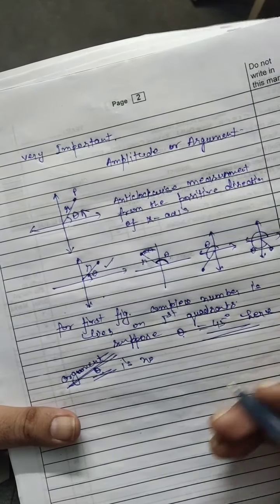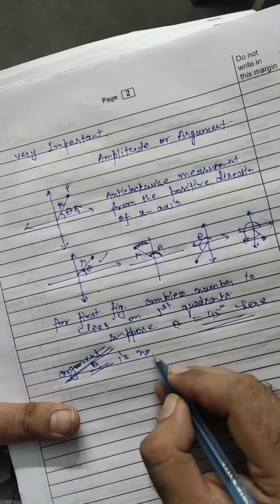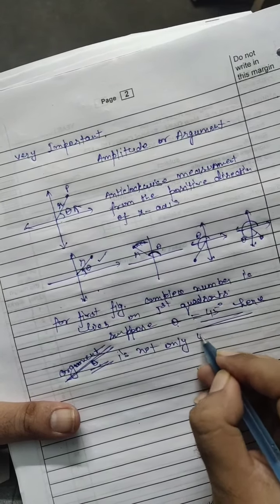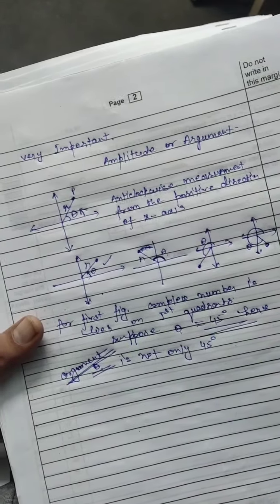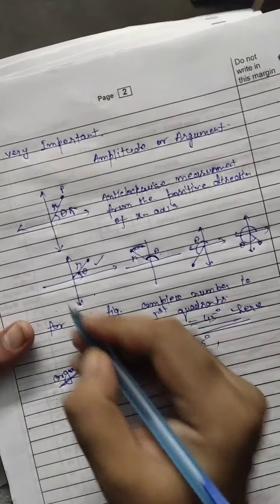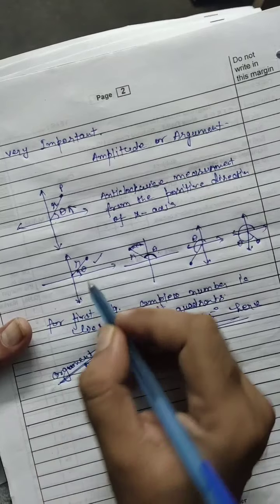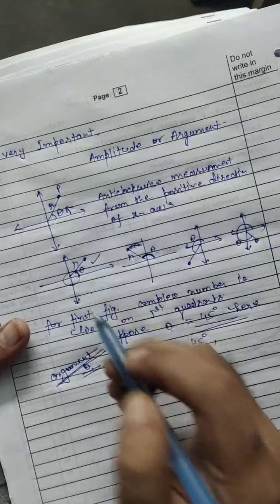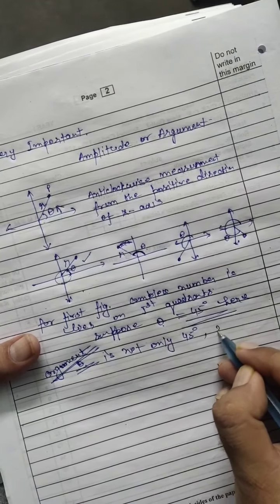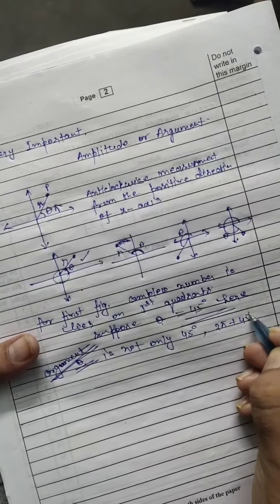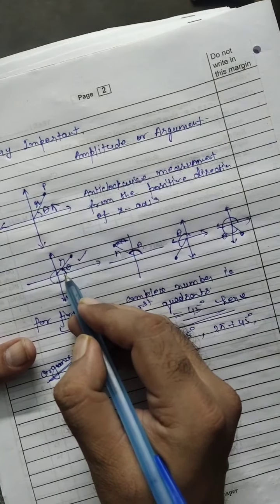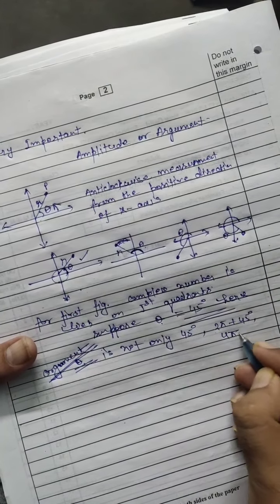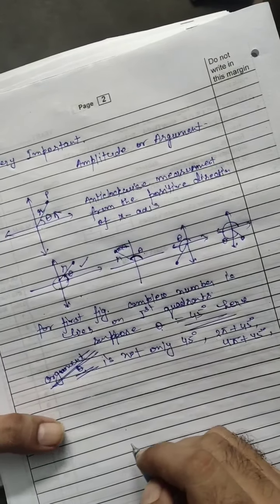This is argument, or you can say amplitude. The argument is not only 45 degrees — you can see here it will be 2π, and 2π plus π/4 will give the same complex number. At 2π plus 45 degrees you get the same value, and at 4π plus π/4 you again get the same value. So we will get infinite arguments.